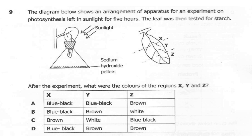A: X blue-black, Y blue-black, Z brown. B: X blue-black, Y brown, Z white. C: X brown, Y white, Z blue-black. D: X blue-black, Y brown, Z brown. So which is the correct answer? We want to look at the parts which will be able to carry out photosynthesis and those which will not. Is it A, B, C, or D?